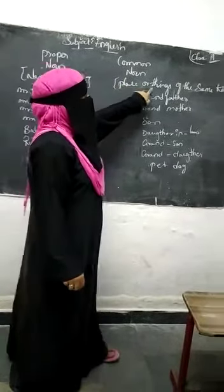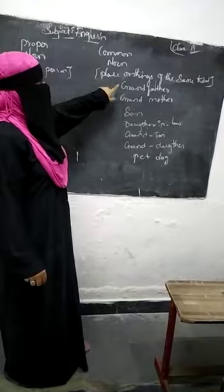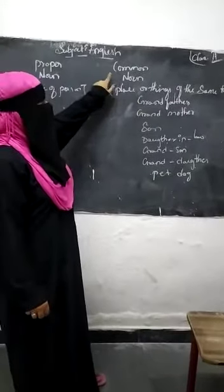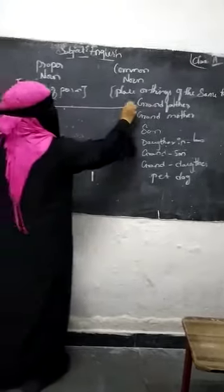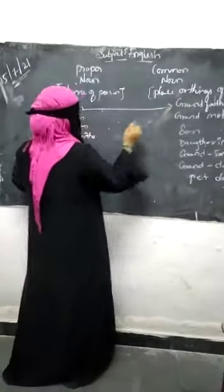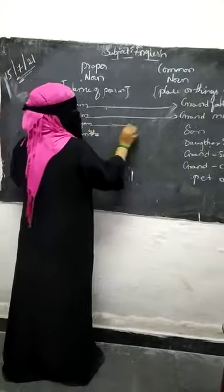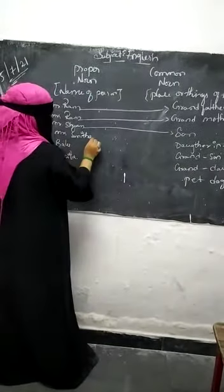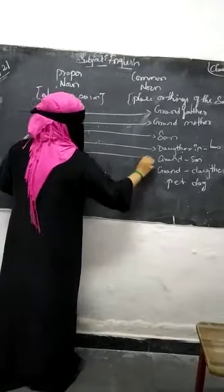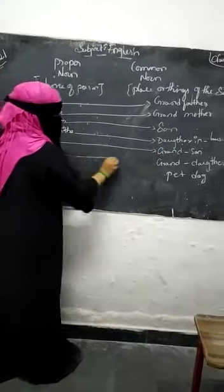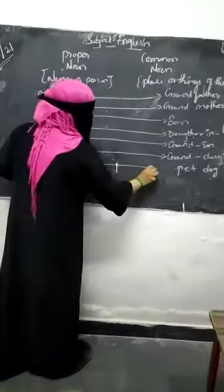Common noun: place or things of the same kind. See here — Mr. Ram is grandfather, Mrs. Ram is grandmother, Mrs. Shayan is son, Mrs. Sunita is daughter-in-law, Valu is grandson, Rupita is granddaughter, and Jolly is pet dog.